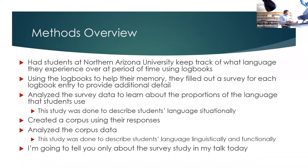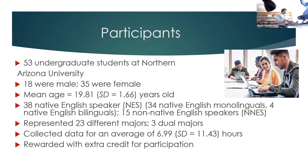The participants were 53 undergraduate students — 18 male, 35 female — which is actually very close to the proportions of students at NAU. There were 38 native English speaking students and 15 non-native English speaking students. While the notion of native and non-native is problematic, it was useful for describing these two groups. They represented a wide variety of majors and collected data for an average of seven hours in exchange for extra credit.